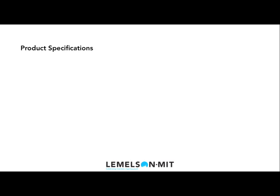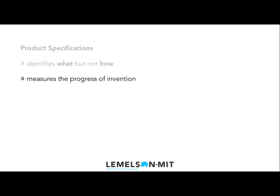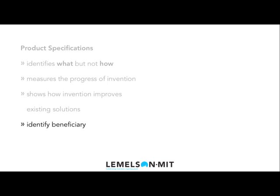Earlier in this module, I talked about the functional performance of an invention. This is referred to as a specification. The most important specifications will be called the product specifications. A specification identifies what an invention does, but not how. A product specification measures the progress of the invention, and it shows how the invention improves upon existing solutions. There are countless specifications for a given invention — how do you decide what are the key ones to be labeled as the product specifications?